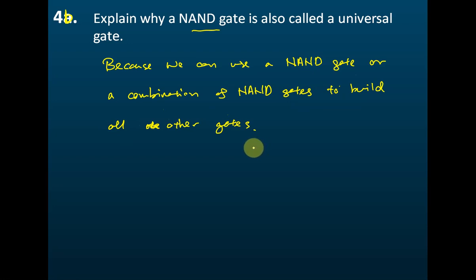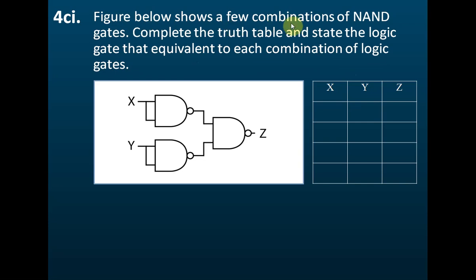The figure below shows a few combinations of NAND gates. Complete the truth table and state the logic gate equivalent to each combination. All of the gates shown are NAND gates, and as mentioned, when we combine them together they can be used to build another gate. So what are the equivalent gates?